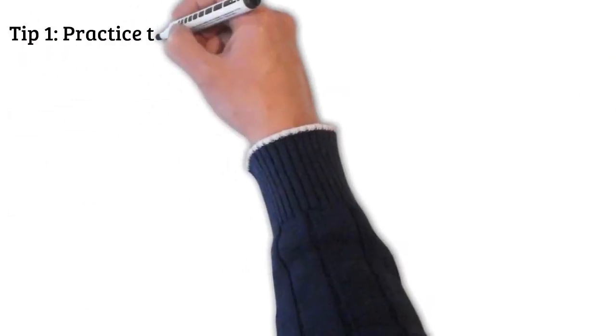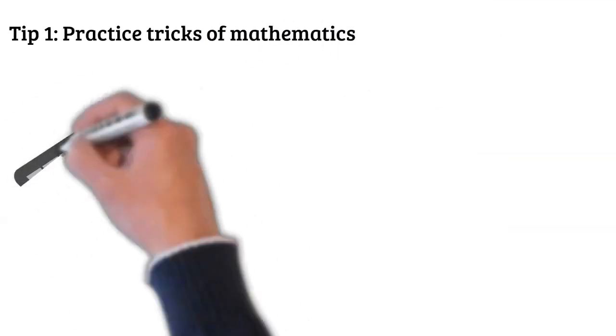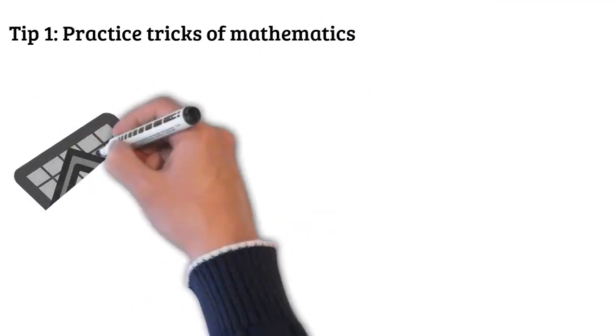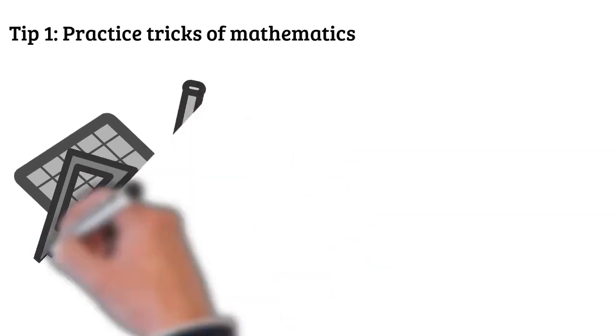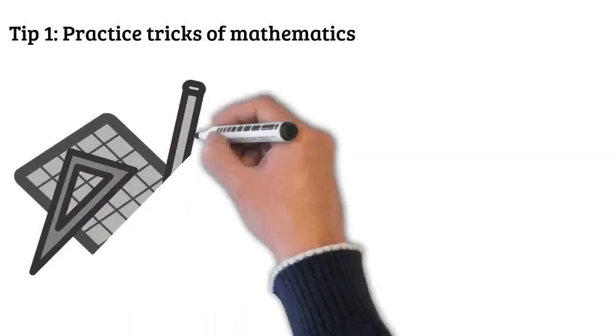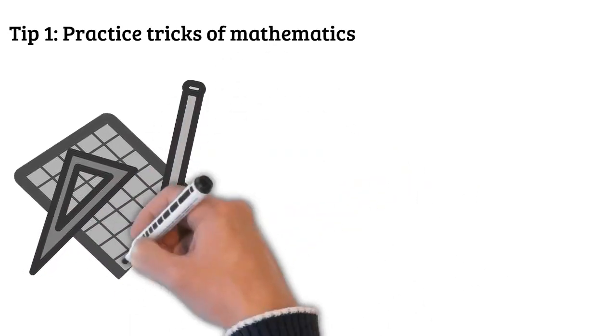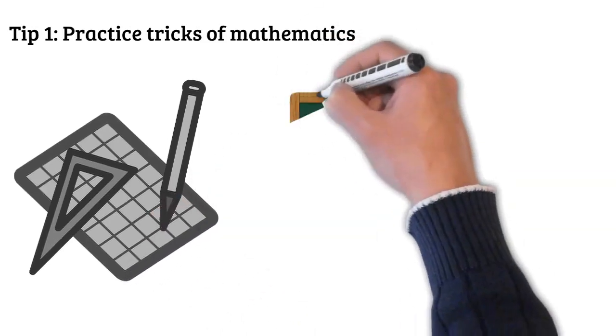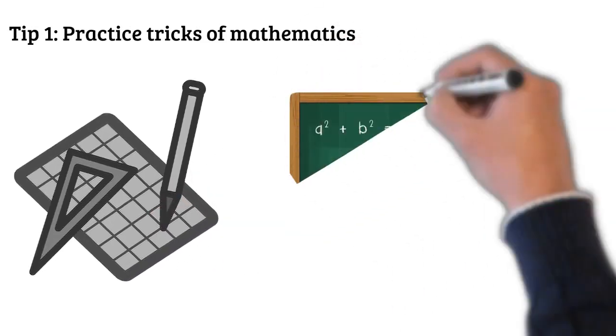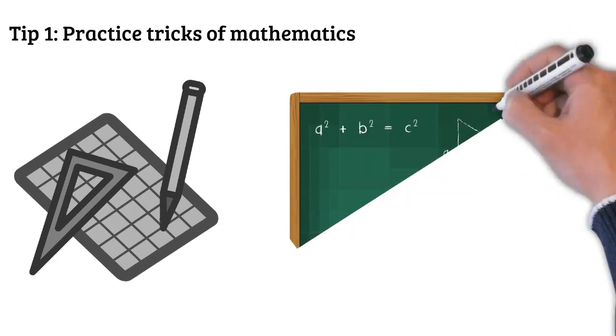Tip 1: Practice tricks of mathematics. Quantitative aptitude is not about mugging information. It is how you apply tricks and tips of mathematics to solve complicated math problems. If you can gain control over your mathematics, CAT will be much easier to crack.